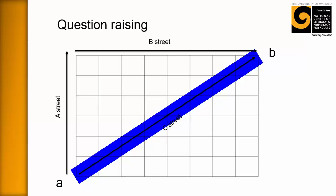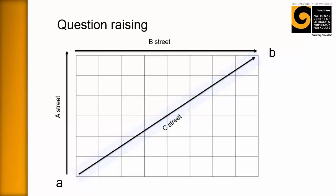Is C Street longer than B Street and A Street together? Or is it shorter? And what's the relationship between them? And these sorts of things. And the idea is you're just beginning to raise their awareness of these questions.